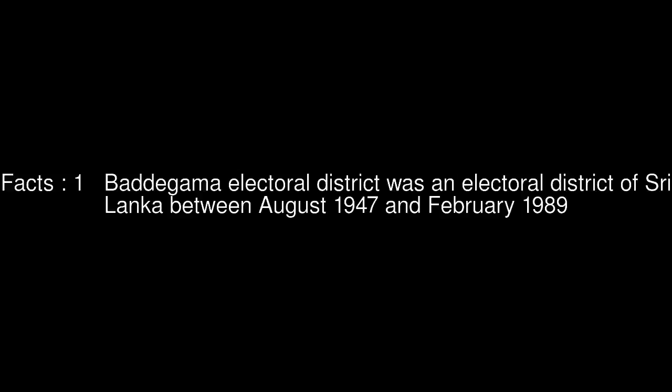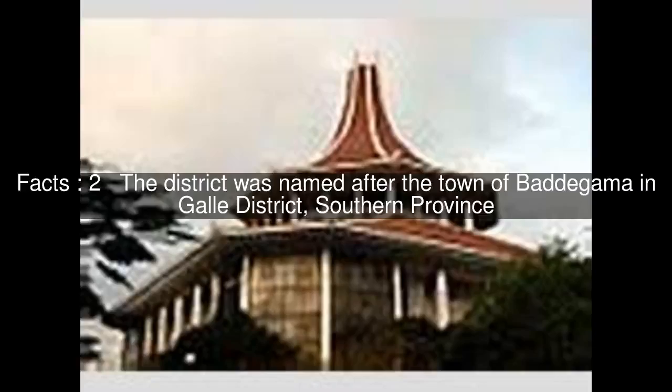Batagama Electoral District was an electoral district of Sri Lanka between August 1947 and February 1989. The district was named after the town of Batagama in Gall District, Southern Province.